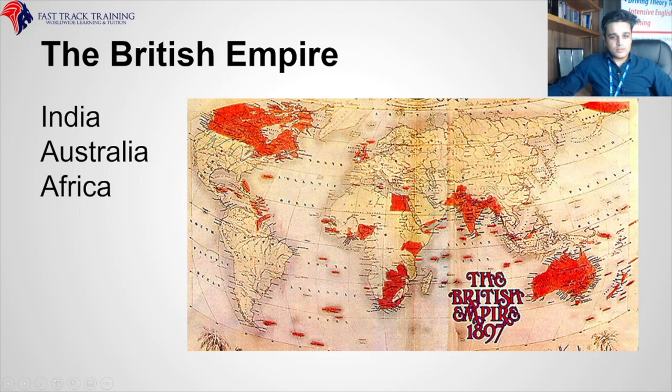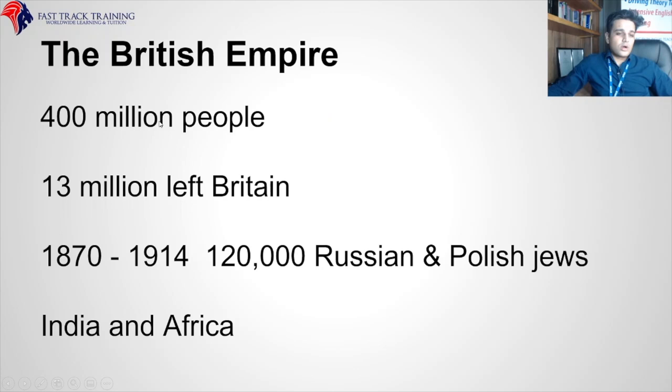From 1870 to 1914, 120,000 Russian and Polish Jews came to Britain. India and Africa were part of the British Empire. However, none of this specific detail has been highlighted as important — none of it is needed for your exam.